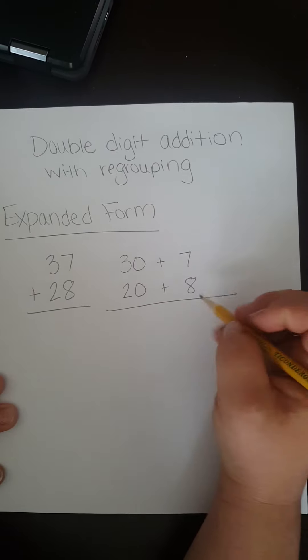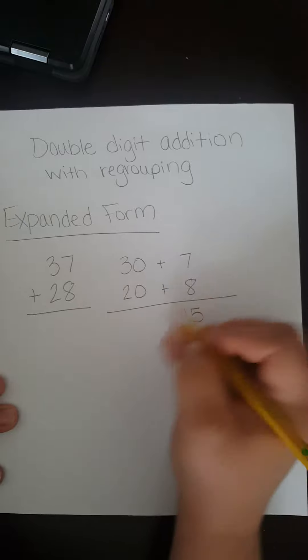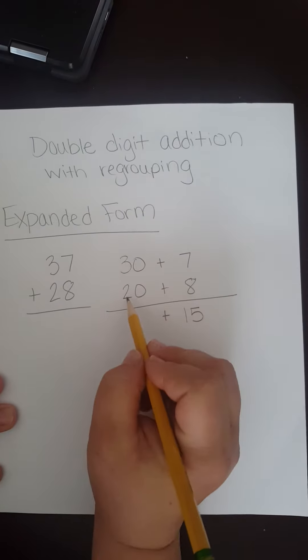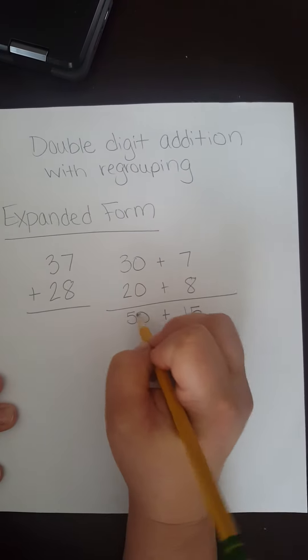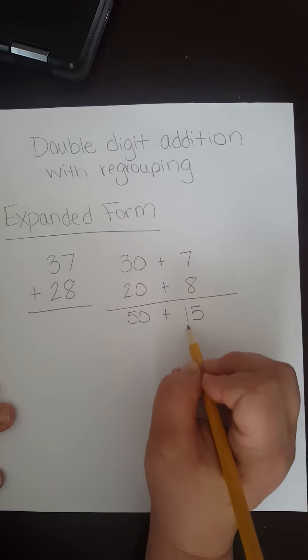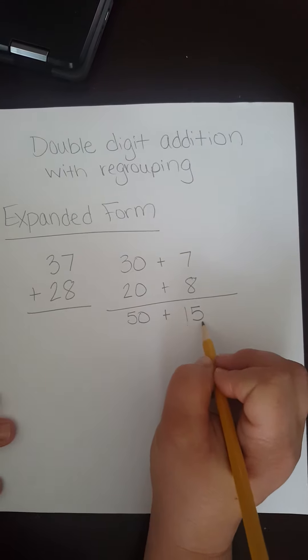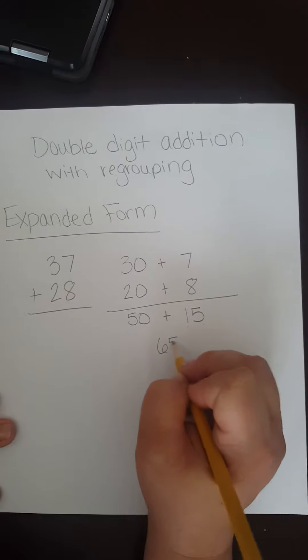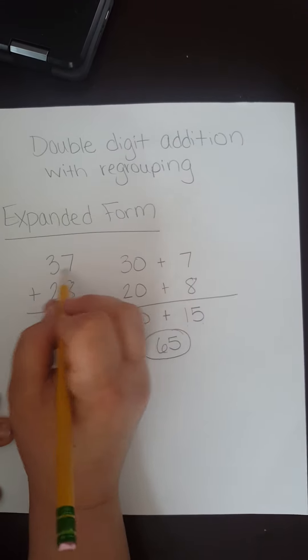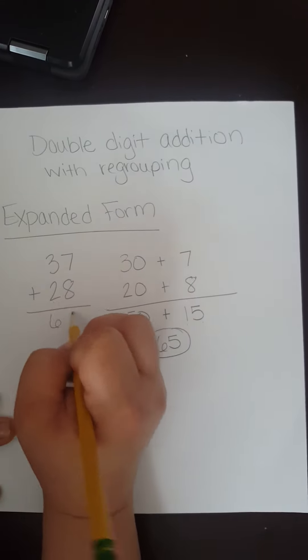So 7 plus 8 is 15. 20 plus 30 is 50. 50 plus 10 is 60 plus 5 more is 65. So 37 plus 28 is 65.